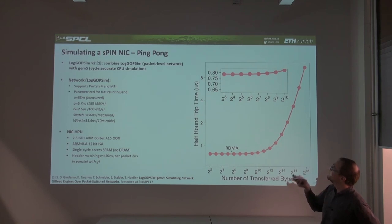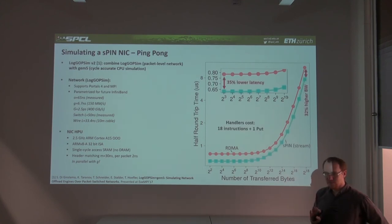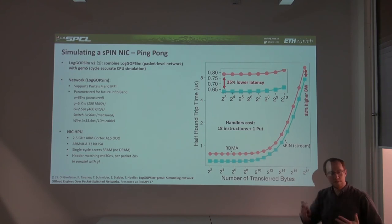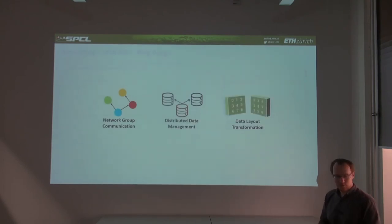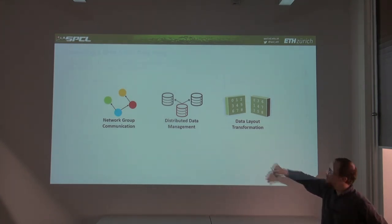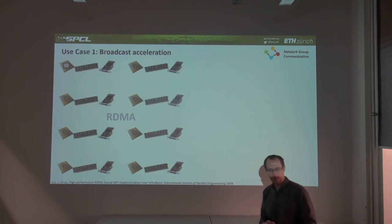SPIN achieves slightly better latency and slightly higher bandwidth than RDMA in ping-pong, for exactly the reasons described: streaming mode and saving the deposit into main memory. But ping-pong isn't the example anyone really uses in practice. We have three use cases: network group communication, distributed data management from a database context, and HPC data layout transformation as data moves through the network. Let me start with broadcast.